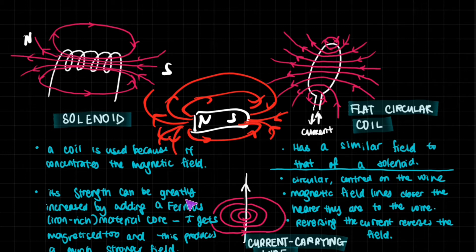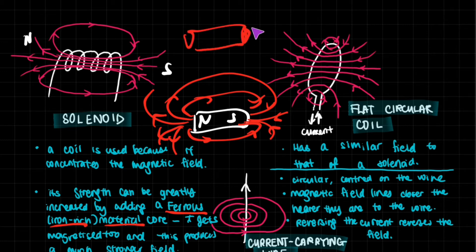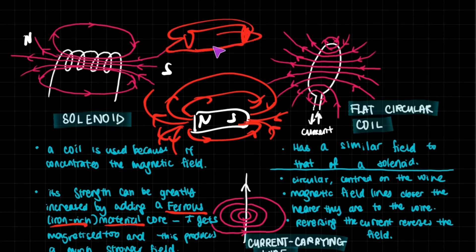A solenoid's strength can be greatly increased by adding a ferrous — iron-rich — core material, such as a cylinder of iron. The iron gets magnetized too, and its field lines add onto the solenoid's field lines, producing a much stronger combined magnetic field.